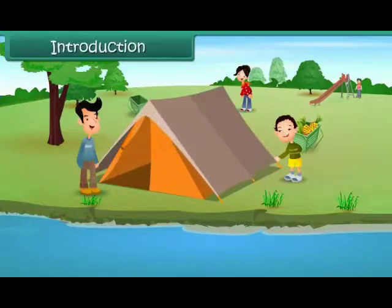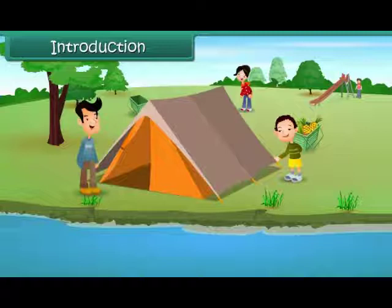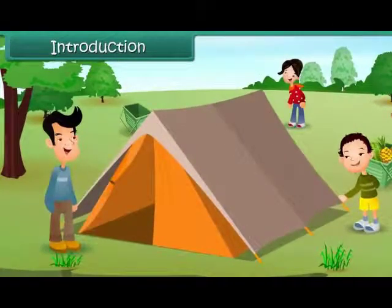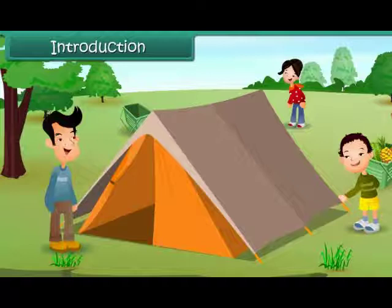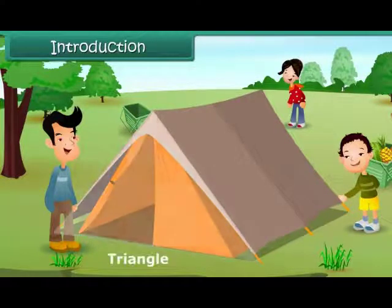Introduction. Vasu has gone camping with his family. He's helping his father pitch tents in an open area near the river. While doing so, he realizes that the tent looks like a triangle.